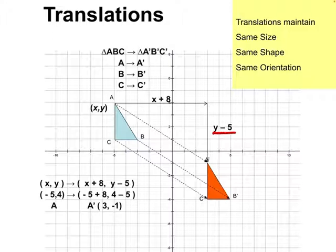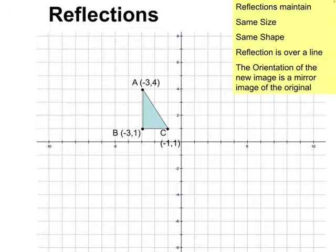A translation is just sliding from one position to another on the coordinate plane — same size, same shape, same orientation. Reflection is a little bit different, because when we reflect something, we reflect it over a line so that we get a mirror image. There are a couple of convenient lines we can use on the coordinate plane: the x-axis and the y-axis.